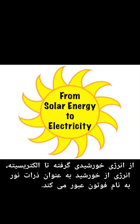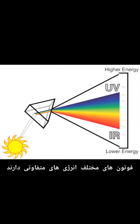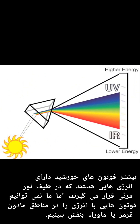From solar energy to electricity. Energy travels from the sun as particles of light called photons. Photons are packets or envelopes of energy. Different photons have different energies. Most photons from the sun have energies that fall within the visible light spectrum, but we cannot see photons with energies in the infrared or ultraviolet zones.